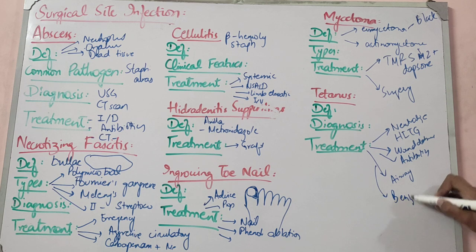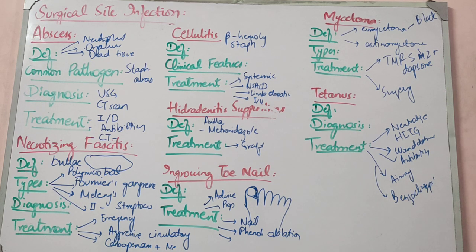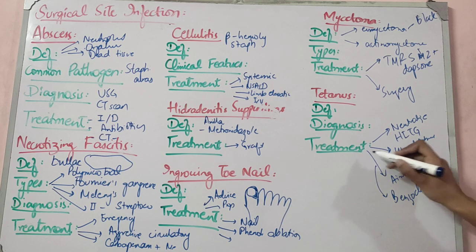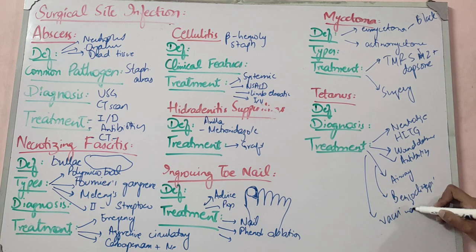If there is significant muscle spasm, give benzodiazepines or sedatives. Provide supportive nutrition, hydration, and prevent secondary infections. Vaccination against tetanus is very important after the acute episode. This is the treatment regimen for tetanus.